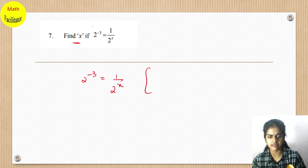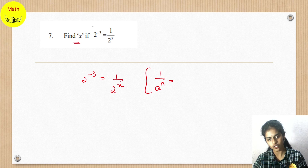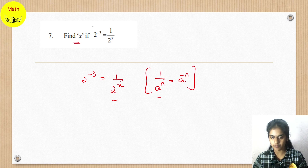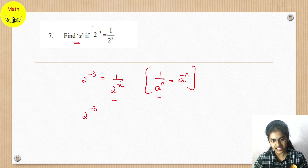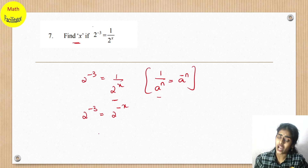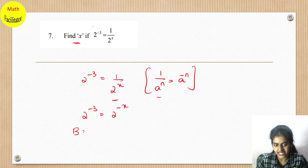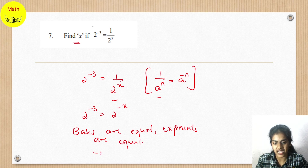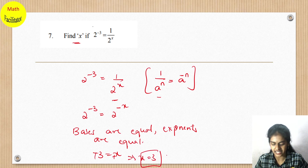Using the formula 1/a^n: if I send 2^x to the numerator, the positive power becomes negative. So 2^(-3) equals 2^(-x). The bases 2 and 2 are equal, so exponents are also equal: -3 equals -x. The negatives cancel, so x equals 3 is the final answer.